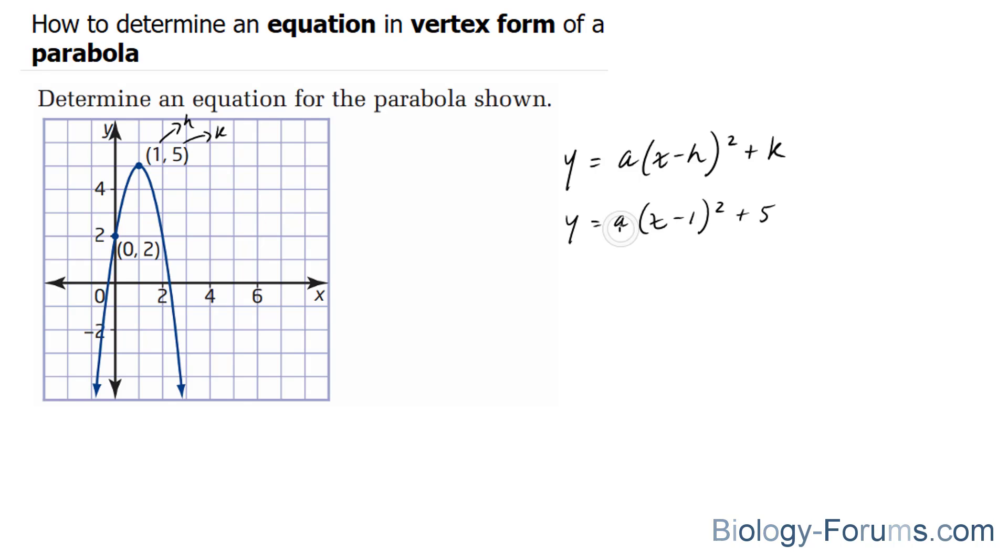And next, in order for us to find out what a is equal to, we have to substitute another point aside from the vertex into our growing equation so that we can discover what a is equal to. And the only point that they've provided is this one, the y-intercept, and it's at (0, 2). So what I'll do next is I'll replace 0 and 2 into my x and into my y, and then subsequently solve for a.